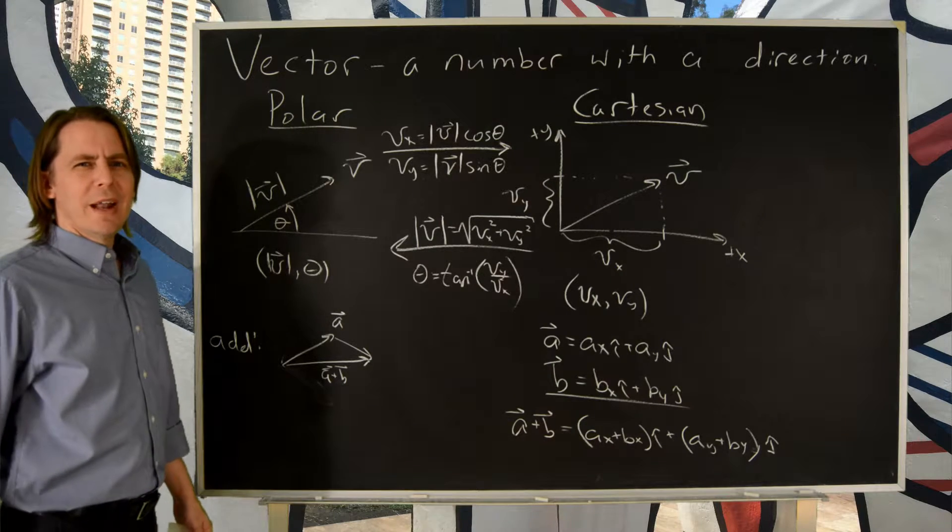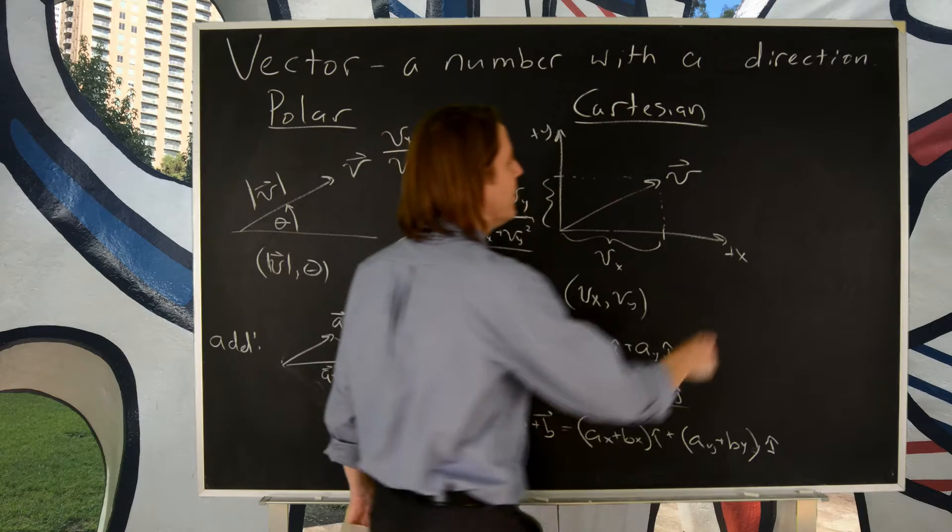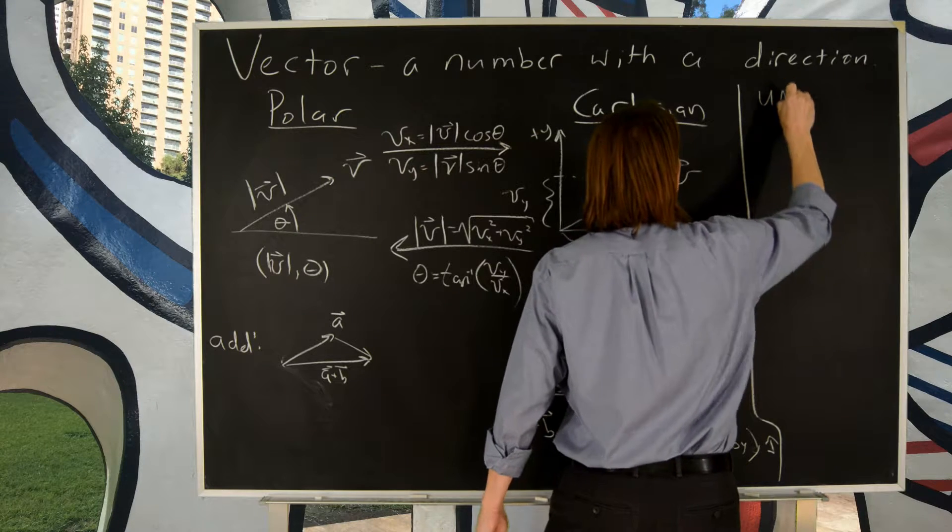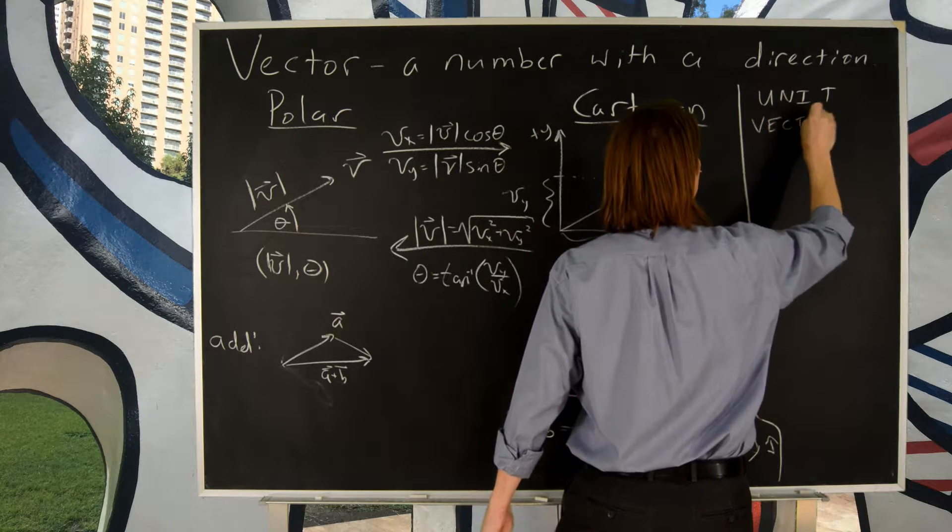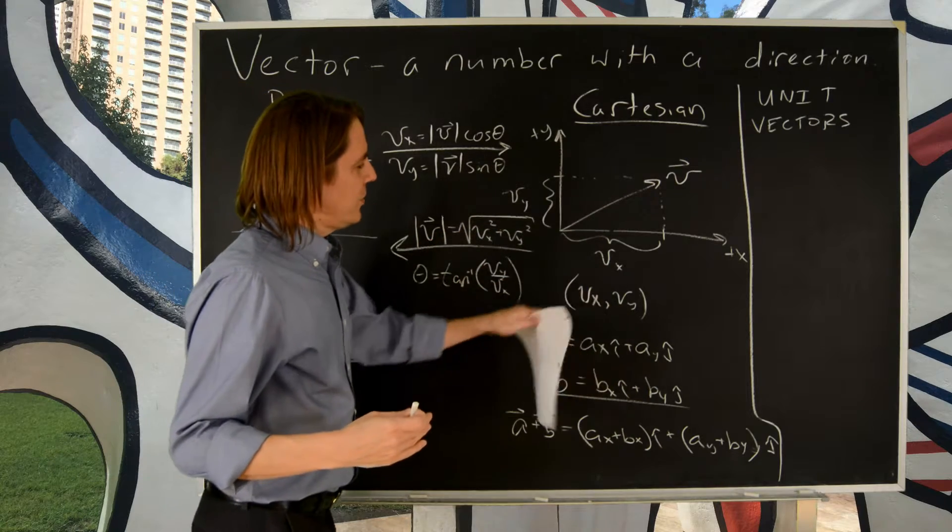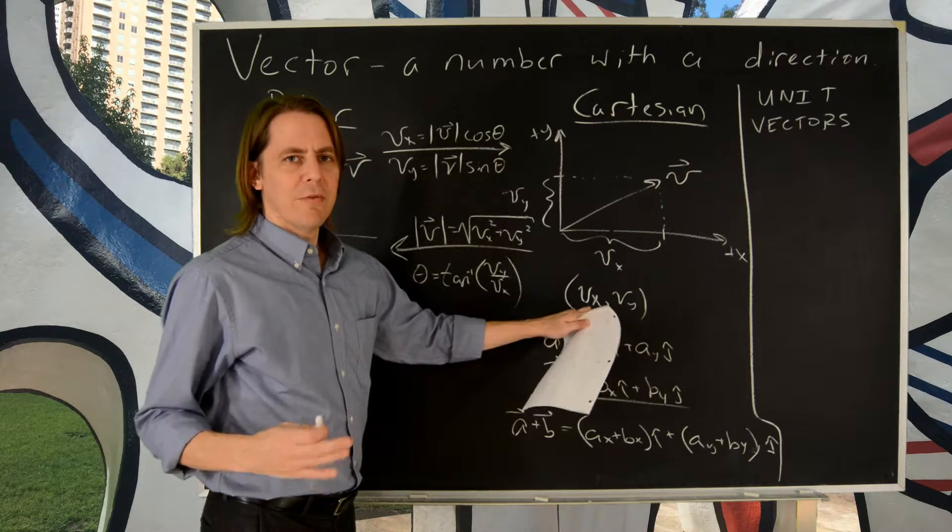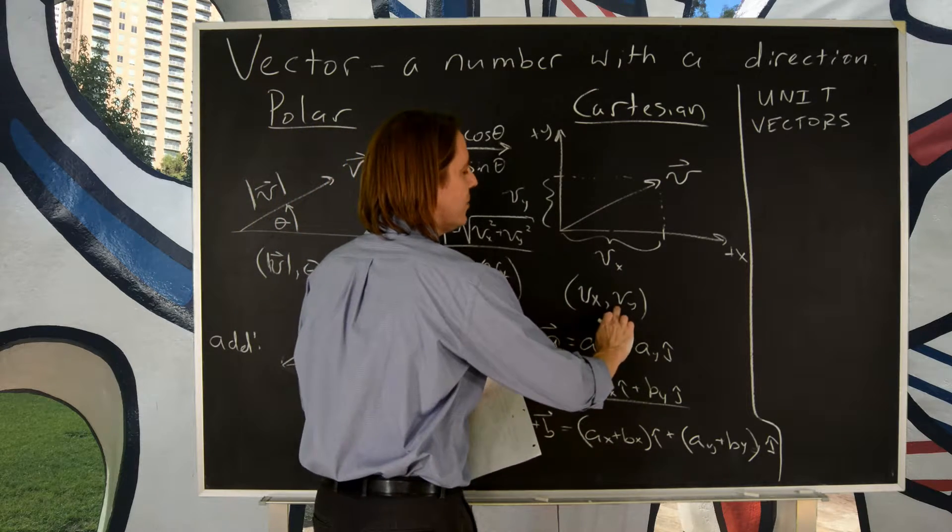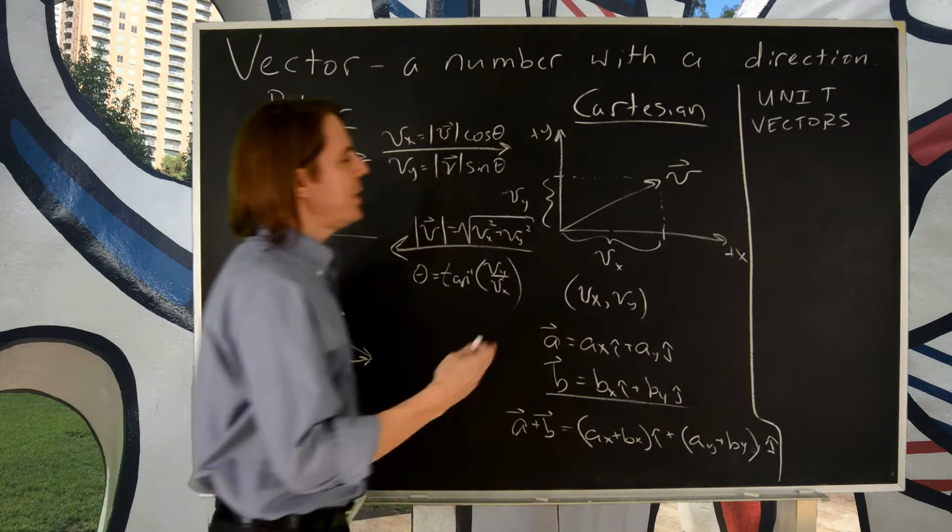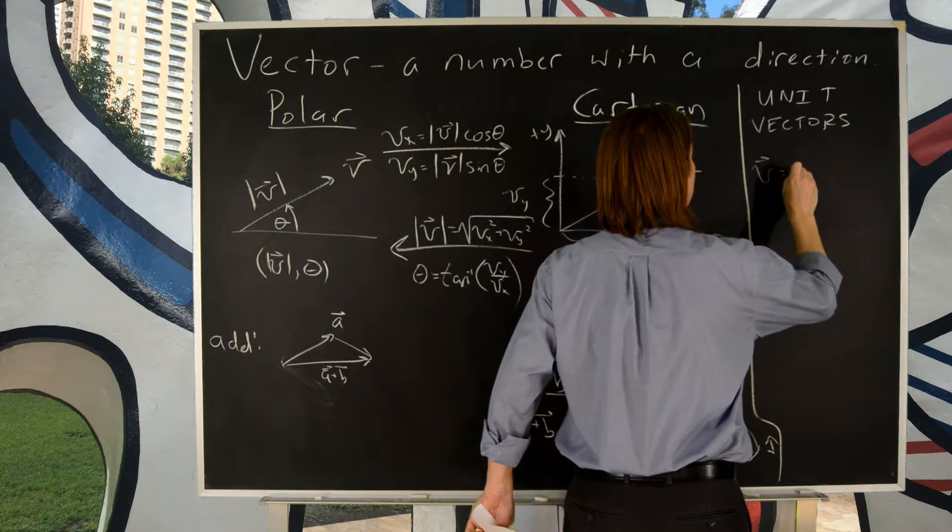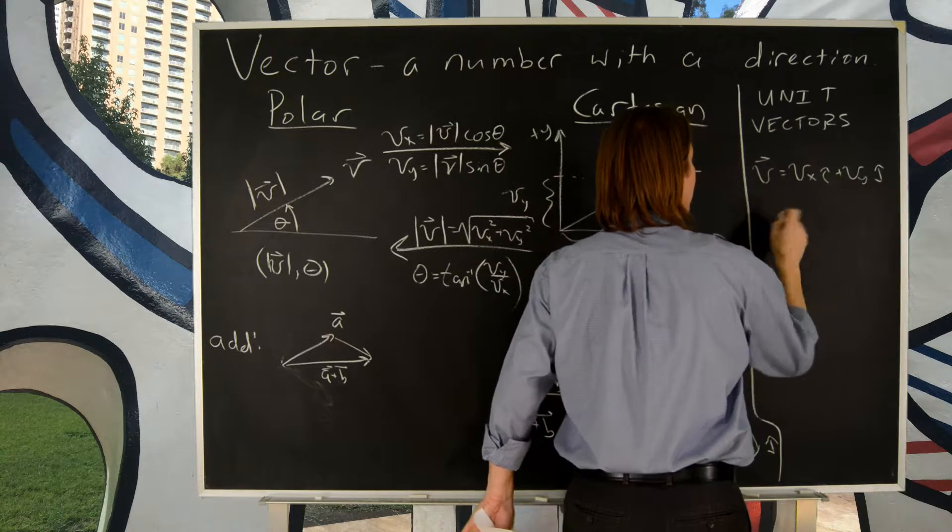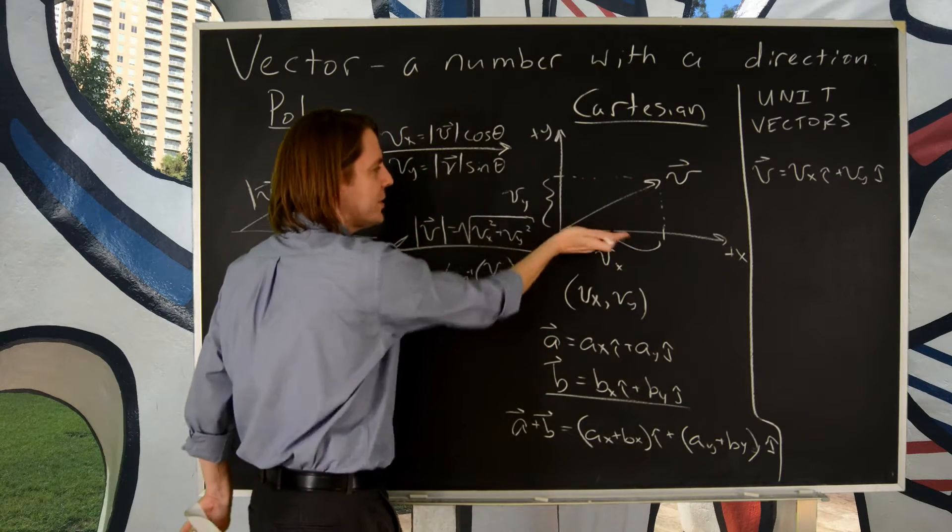That's everything except what was that hat? What in the heck is i hat and j hat? What was I talking about? Those are unit vectors. And these tend to freak people out. Okay, unit vectors. So they're important in Cartesian because these numbers are scalars. Vector components are not vectors. They are scalars. And we know that this one tells you along the X axis. This one tells you the Y axis. But we want to be able to write it algebraically. We want to be able to add them.